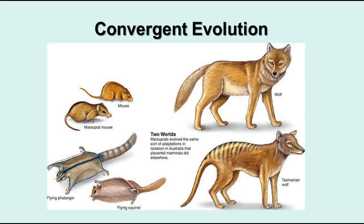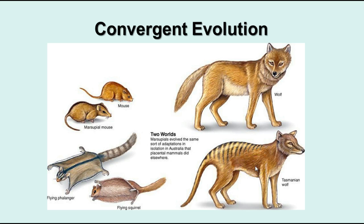Convergent evolution is when vastly different species with different backgrounds end up being very similar because they have similar habitats. This slide shows placental mammals — the kind we have in our part of the world — and marsupials, the kind found in Australia, New Zealand, and parts of New Guinea. Marsupials have babies born very early that migrate from the birth canal to a pouch where they continue development. An example would be a kangaroo, or the possums we have in North America. They have different origins but there are striking examples of animals from these two groups that are very similar in habitat and habits.